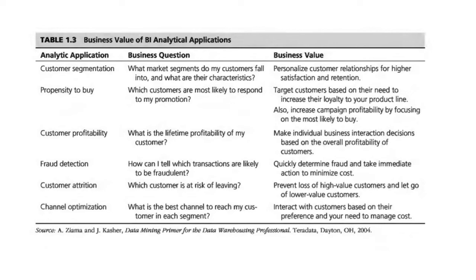The outcome of propensity-to-buy analytics is targeting customers based on their needs to increase loyalty and campaign profitability by focusing on those most likely to buy. For customer profitability, the research question is 'What is the lifetime profitability of my customer?' — enabling individual business transaction decisions based on overall customer profitability. For fraud detection, the question is 'Which transactions are likely to be fraudulent?' — with the outcome being quickly determining fraud and taking immediate action to minimize cost.